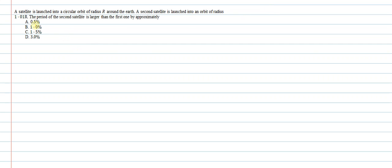Hello students, we'll understand this question now. A satellite is launched into a circular orbit of radius r around the earth. A second satellite is launched into an orbit of radius 1.01 times r. The period of the second satellite is larger than the first satellite by approximately which of these options? We need to find out